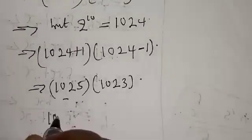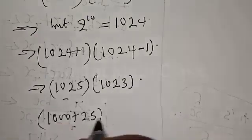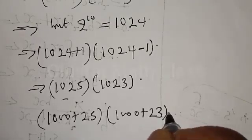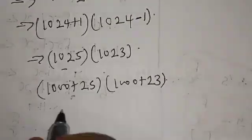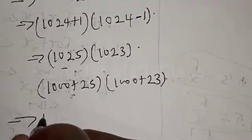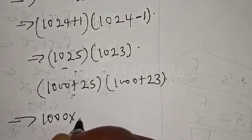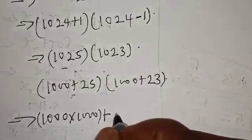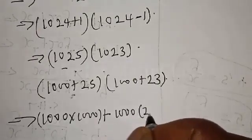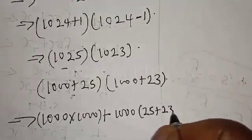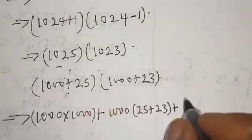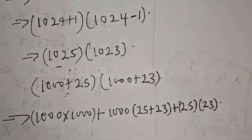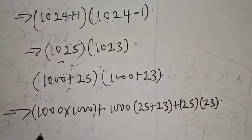Now 1025 can be expressed as 1000 plus 25, and 1023 as 1000 plus 23. So we have 1000 plus 25, into 1000 plus 23. Expanding: we have 1000 multiplied by 1000, that is 1000 times 1000, then plus 1000 multiplied by 25 plus 23, then plus 25 multiplied by 23.